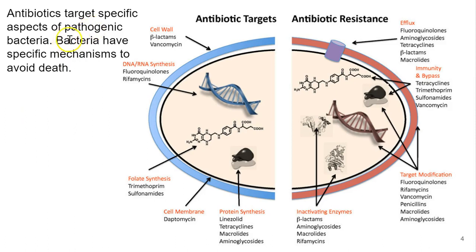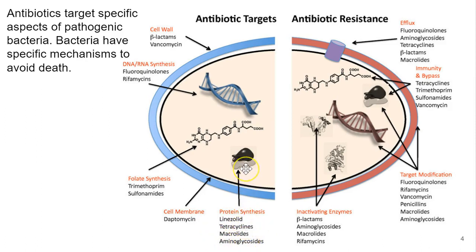Antibiotics all target some specific aspect of a bacterium. For example, the fluoroquinolones target DNA or RNA synthesis. The beta-lactams and vancomycin target cell wall synthesis. Trimethoprim and the sulfonamides target folate synthesis. Daptomycin targets the synthesis of the cell membrane. And the tetracyclines and other drugs target protein synthesis. The way these antibiotics kill or inhibit bacteria is by disrupting the cellular processes that bacteria need in order to survive, grow, or replicate.